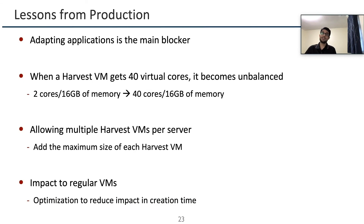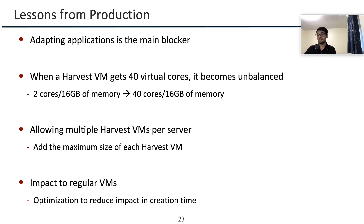Finally, we present the lessons from our production deployment. First, adopting applications for Harvest VMs is a main blocker, as users' workloads cannot make the best use of additional cores without modifying applications like Harvest Hadoop. Our current implementation only harvests CPU cores, which may lead to VMs that cannot use some cores because memory might be the bottleneck — for example, if a Harvest VM becomes 40 cores with only 16 GB of RAM. To address this imbalance, we are implementing the ability to allow multiple Harvest VMs per server by limiting each to a maximum size. Our initial implementation of core reassignment had unexpected side effects on regular VMs, which was fixed by using a different hypervisor API, making the overheads negligible.